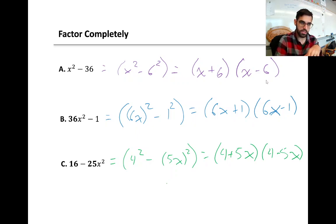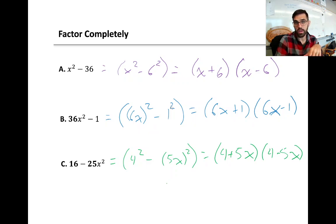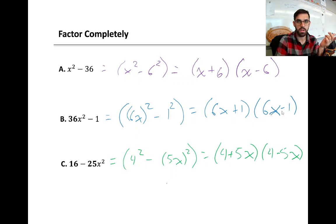The next one we can rewrite as the quantity 6x squared, with brackets around the 6x so we're squaring both the 6 and the x, and we're subtracting 1 squared, because 1 is the same as 1 squared. So our a value is 6x and our b value is 1. The factored form for this difference of squares is 6x plus 1 times 6x minus 1.